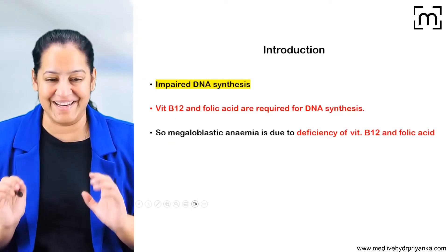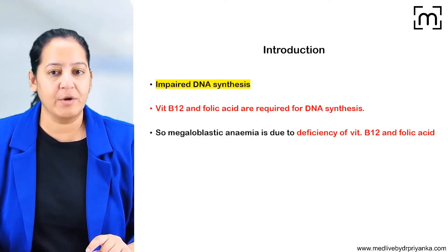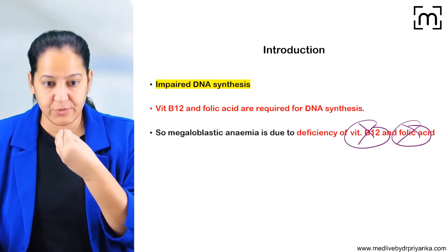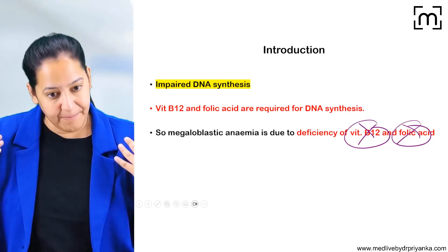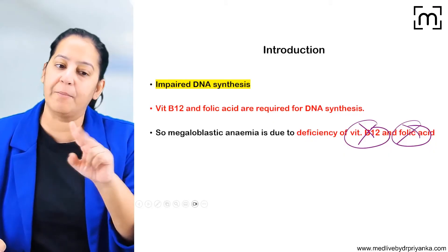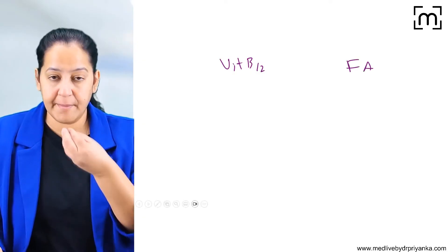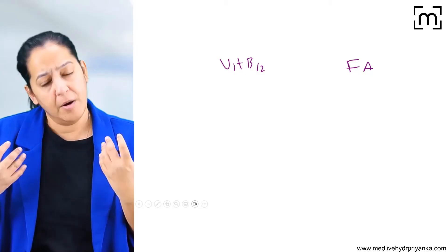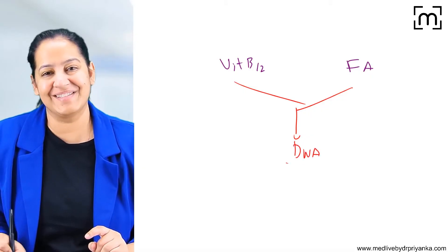What is megaloblastic anemia? In megaloblastic anemia, the person has a deficiency of one or both of the following: vitamin B12 or folic acid. Either the person is not eating enough vitamin B12 or folic acid, or they are eating it properly but it is not being absorbed. So ultimately, the blood of the person is deficient in one or both of them. Both vitamin B12 and folic acid are required for the synthesis of DNA.